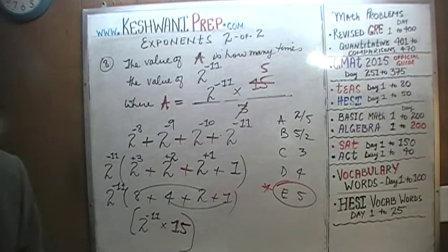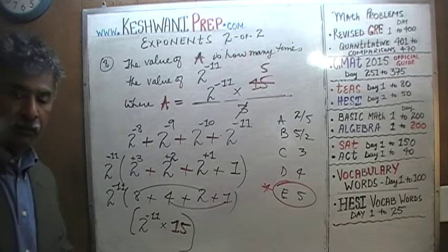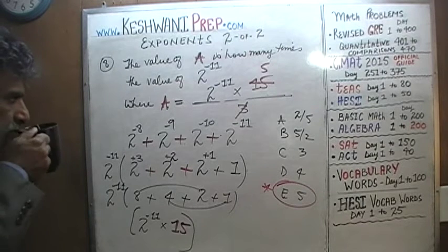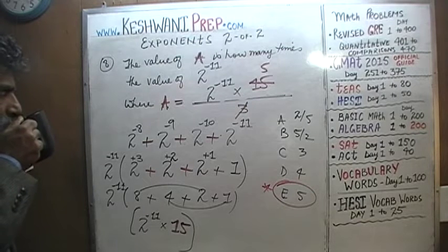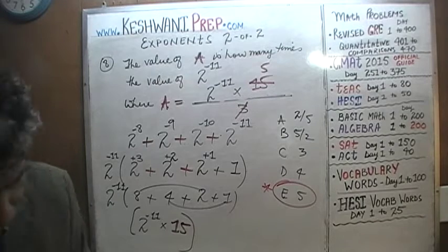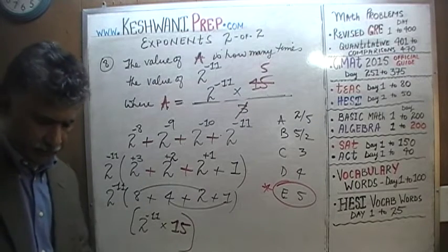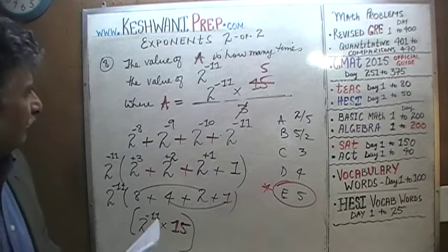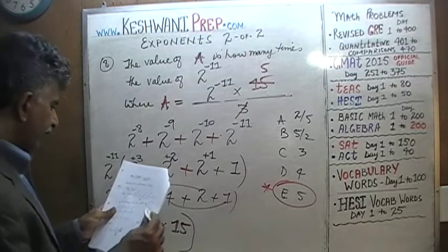That was number 8. Let's do the penultimate one — the second to last. We have two more: numbers 9 and 10. Hopefully on the next one I will pay attention and not give you the wrong problem. Number 9 is very similar to what we just did, so I would like you to do it yourself first.